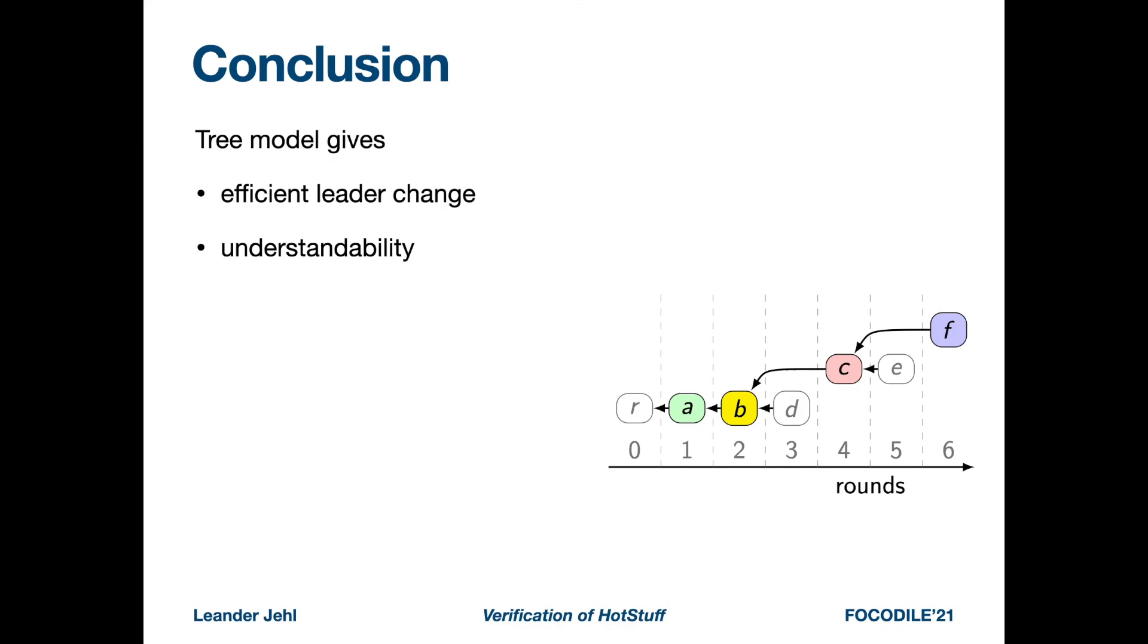So to conclude, I want to conjecture that the tree model allows to design algorithms with efficient leader change that are easy to understand. While I do not think that we absolutely need more consensus algorithms, I want to encourage you to consider the tree model if you find yourself designing a new consensus algorithm. Thank you for this and I will be happy to take your questions.